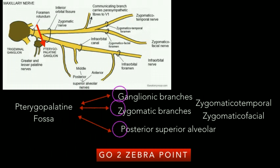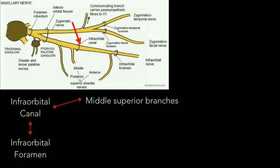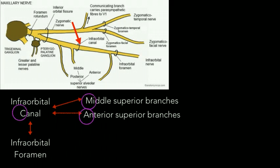After that, the nerve enters the infraorbital canal. As shown by the red arrow on the diagram, it gives out two branches in the infraorbital canal: the middle superior alveolar branch and the anterior superior alveolar branch. To remember this, we take M from middle superior alveolar, A from anterior superior alveolar, and C from infraorbital canal — and remember this as 'MAC.'